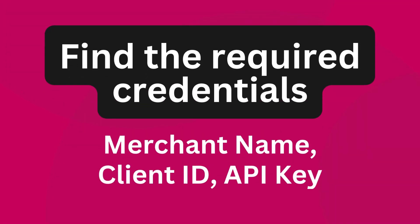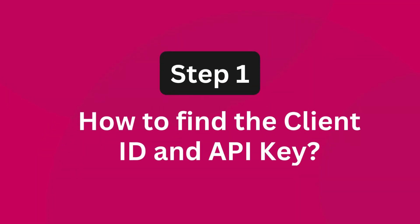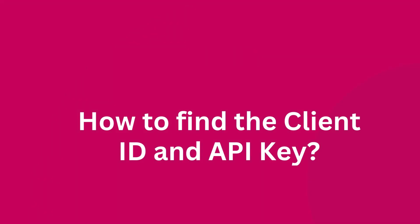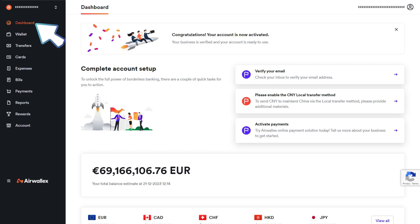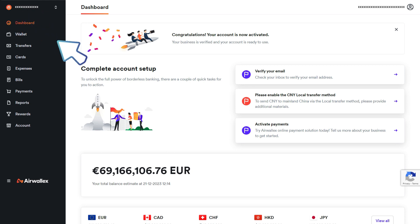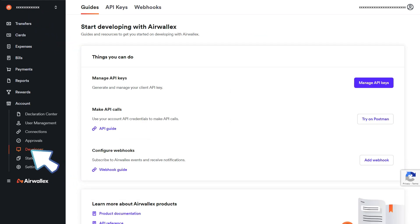Step 1: Find the merchant name, client ID, and API key from the Airwallex account. To find the client ID and API key, log into the Airwallex account and go to the dashboard, then go to the Developers section.